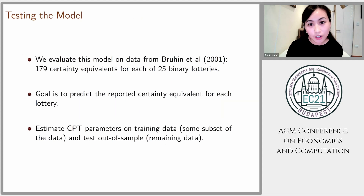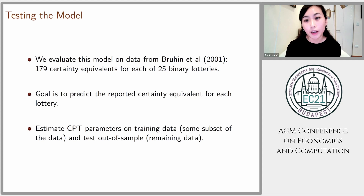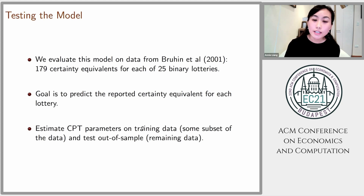We can test this model using actual data of certainty equivalents. Specifically, we use a data set from Bruhen et al., which includes 25 binary lotteries with 179 reported certainty equivalents for each lottery, reported across different subjects. Our goal is: given a lottery, can we predict the certainty equivalent given by a specific subject? We test the model by estimating these four free parameters on some subset of the data — the train data — then using that estimated model to predict the remaining data, the test data, and looking at how well the model does.